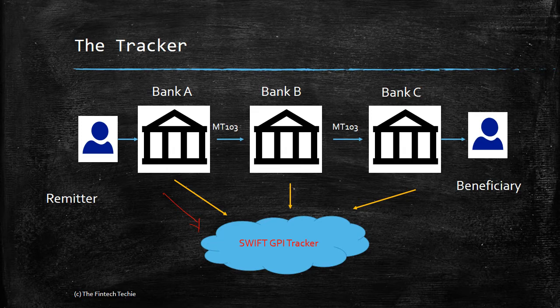So bank A sends, bank B sends, and the final confirmation is sent by bank C. Obviously bank A will not send because it's the first party in the chain, but bank B and bank C send it. So this tracker is now accessible for all banks A, B and C. So at any point of time, they can come to know where the payment is, has it been credited to the beneficiary or it's still on the way, what are the charges being debited, and so on.